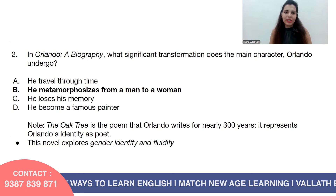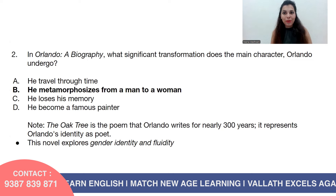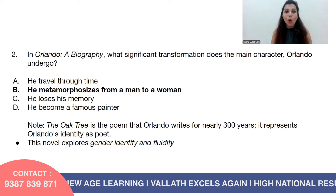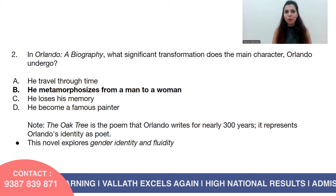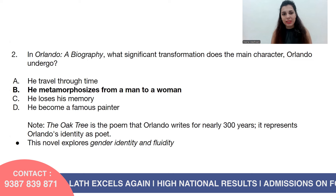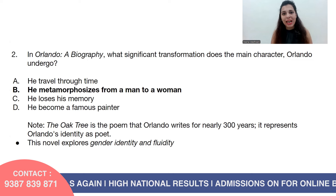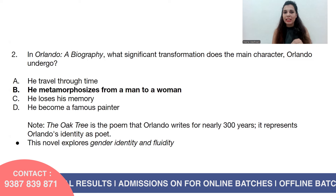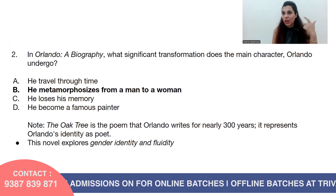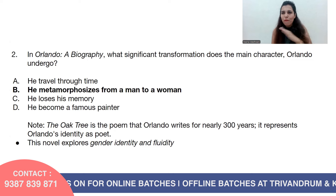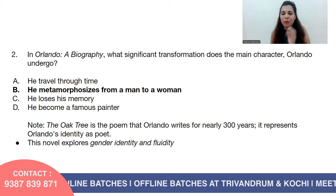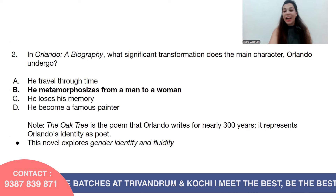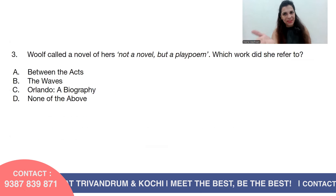An important point: there is a poem Orlando writes for nearly 300 years called 'The Oak Tree,' which represents Orlando's identity as a poet. The novel Orlando: A Biography explores gender identity and gender fluidity — there is no fixed definition of male, female, or sexuality. That is what Orlando tells us.